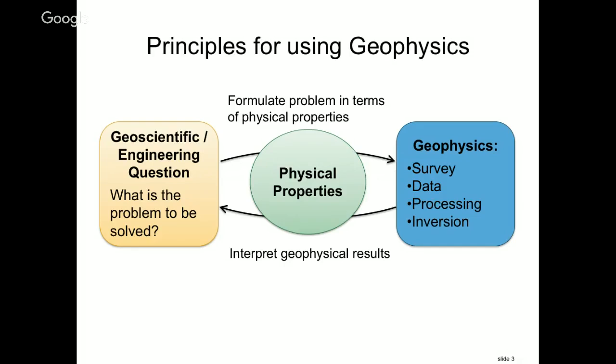The information is conveyed back about the physical properties to the person who initially had the problem. That person may not be a geophysicist and may not know much about geophysics at all. They communicate through these physical properties, meaning the question has to be formulated in terms of physical properties, and when a physical property comes back, it provides information as to the answer of that geologic question.